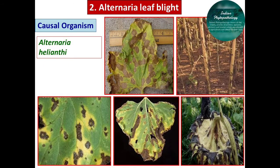For management of Alternaria blight, all integrated control and cultural practices should be applied. We can grow tolerant varieties like PSH-1, which is found tolerant against Alternaria leaf blight. Similarly, all infected plant debris should be kept outside the field to reduce the initial inoculum. Optimum spacing should be maintained, that is 60 by 30 centimeters, which is helpful for reducing disease spread.